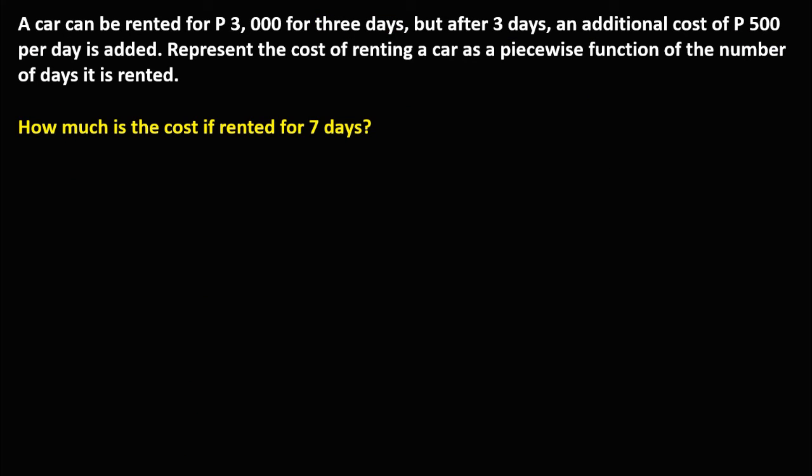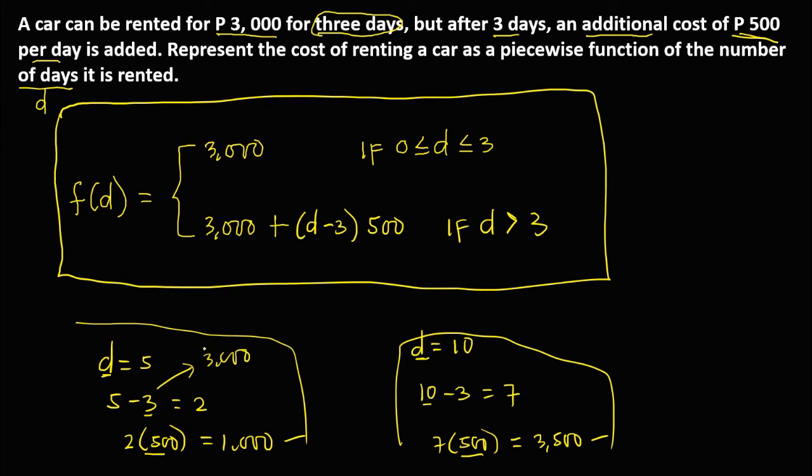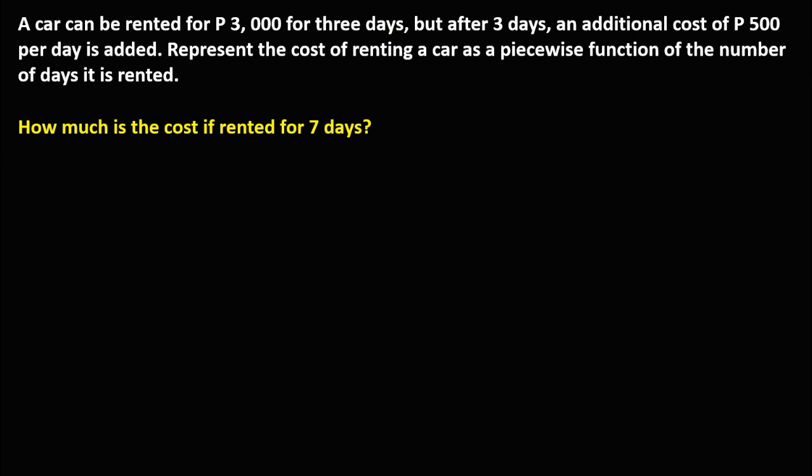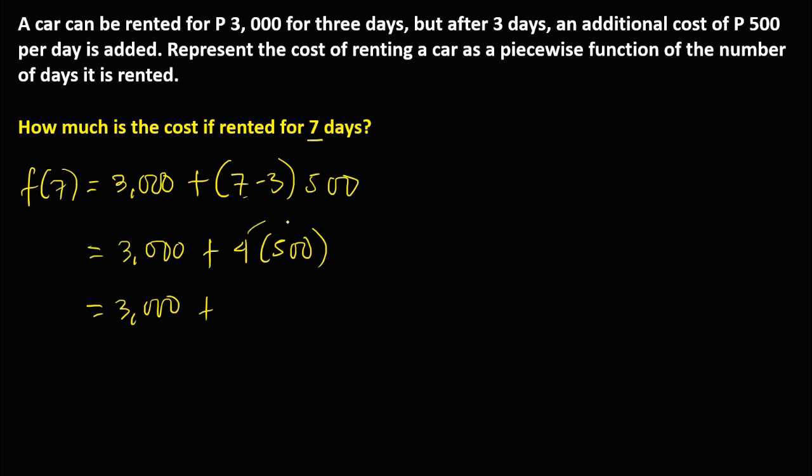How much is the cost if rented for 7 days? Since 7 days, we're going to use this formula. F of 7 is equal to 3,000 plus the number of days, that's 7, then minus 3 times 500. That's 3,000 plus 7 minus 3, that's 4, then times 500. We have 3,000 plus 4 times 500, this is 2,000. Therefore, the cost for 7 days is 5,000 pesos.